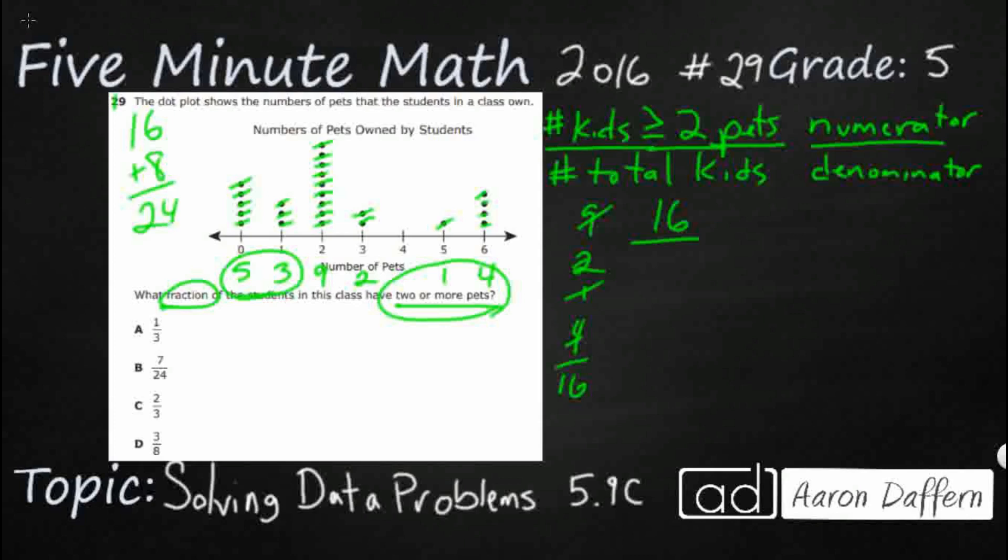So it looks like if you add all of these numbers, five plus three, plus nine, plus two, plus one, and plus four, you're going to get your 24, and that's your total. So here's my fraction. 16 kids have two or more pets out of 24 total kids because eight of them had one or zero pets.